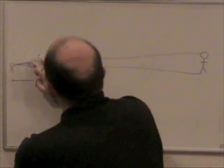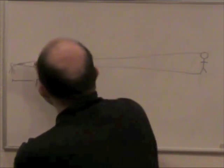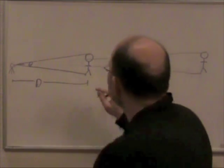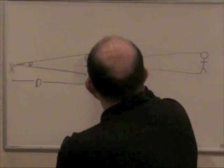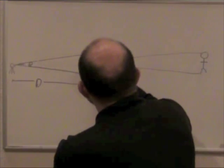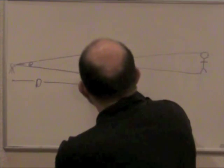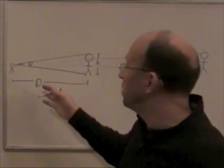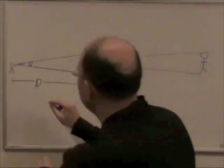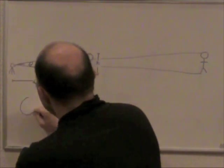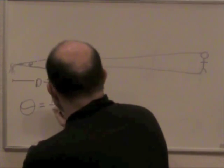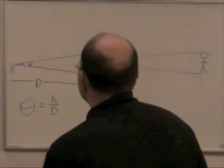and the angle that it takes up in the camera is theta, and let's say the height of the person is H. We won't usually use H in astronomy. We'll say something like D for diameter, but to avoid confusion with this D, we'll call it H for now. The mathematical relationship is that this angle theta is simply equal to H over D.